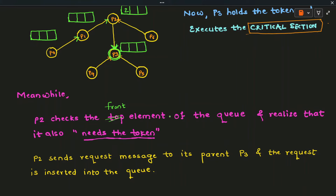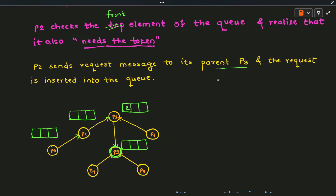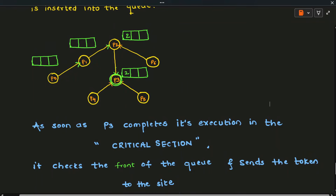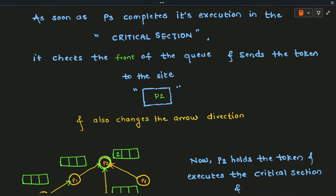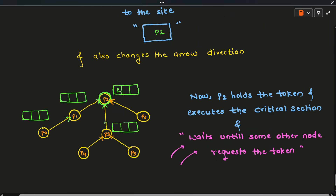Meanwhile, P2 checks the front element of its queue and realizes it needs the token. P2 sends a request message to its parent P3, and the request is inserted into P3's queue. As soon as P3 completes its execution in the critical section, it checks the front of its queue and sends the token to the site at the front. P2 is at the front, so P3 passes the token to P2 and changes the direction of the arrow. All arrows now point to P2, and P2 receives the token and deletes the entry from the front of its queue.